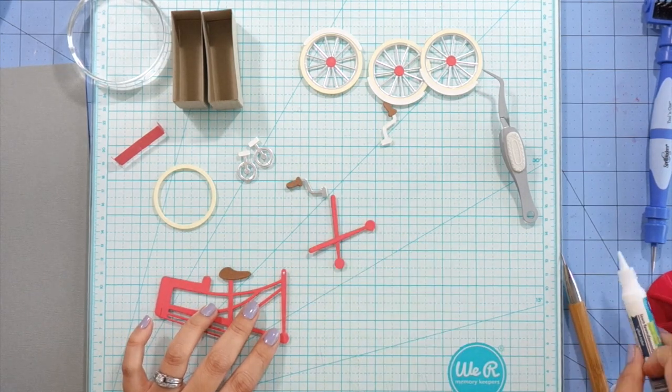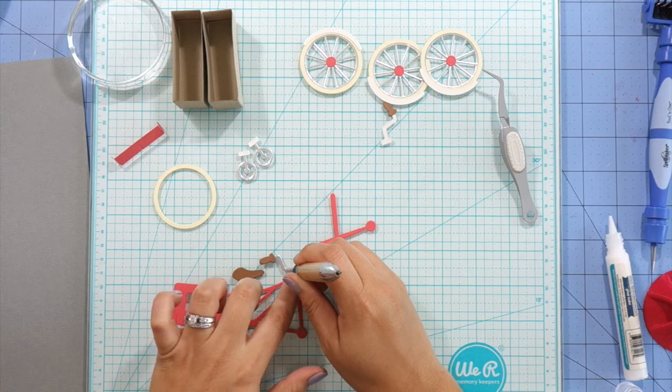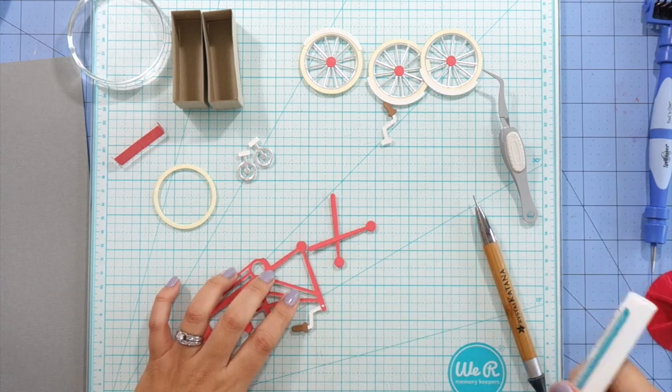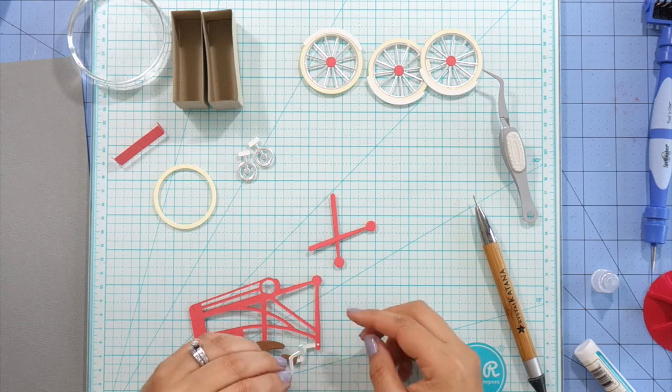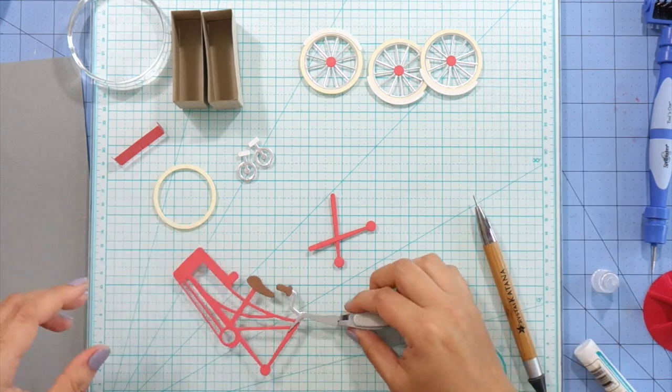I am going to attach the handlebars. Here is the front side and you can see it lines up to the top of the frame, and here is the other side so I guess technically that would be the left handlebar.